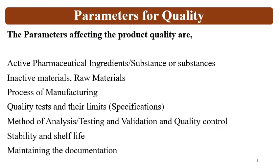The parameters affecting product quality are related to: active pharmaceutical ingredients or drug substances, including combination formulations; inactive materials, raw materials, or excipients; the manufacturing process for both drug substance and drug product; quality tests and their limits, i.e., specifications; methods of analysis, testing, and analytical method validation; quality control methods; analytical methods for stability testing; and stability and shelf life of the drug substance and drug product, along with documentation for all quality parameters.